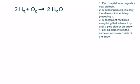Number two, a subscript multiplies only the element immediately preceding it. These small twos that are slightly lower in spacing than the element symbol that precedes them are subscripts. So this one here multiplies only that O. This subscript here multiplies only that H, and so on.